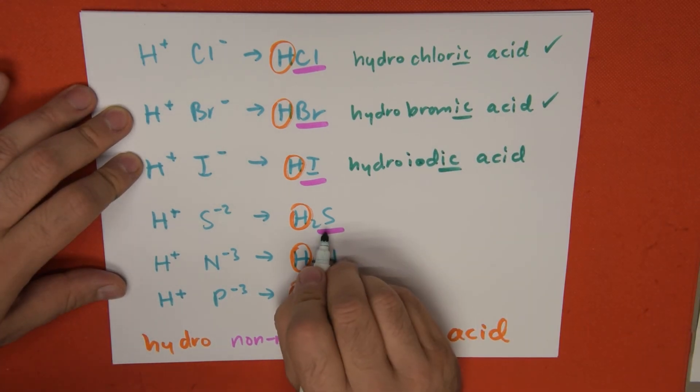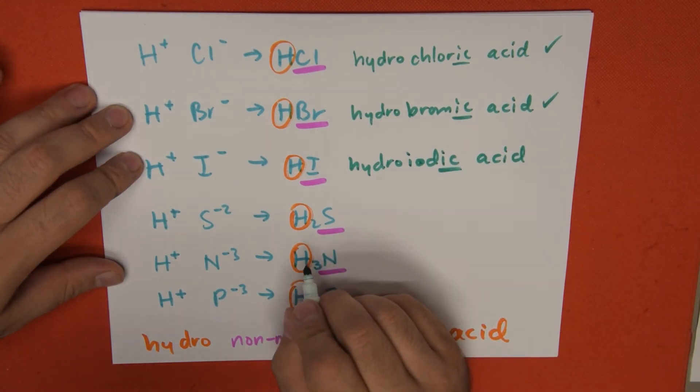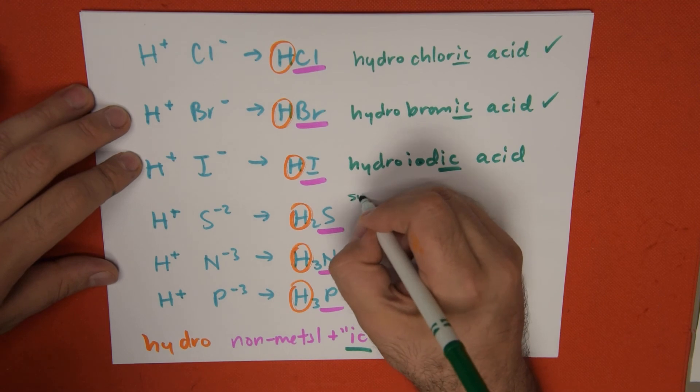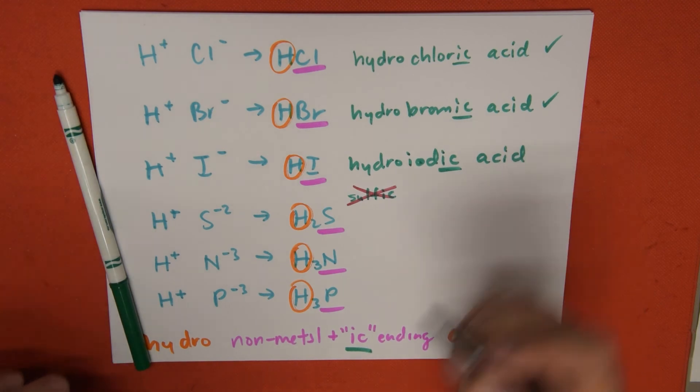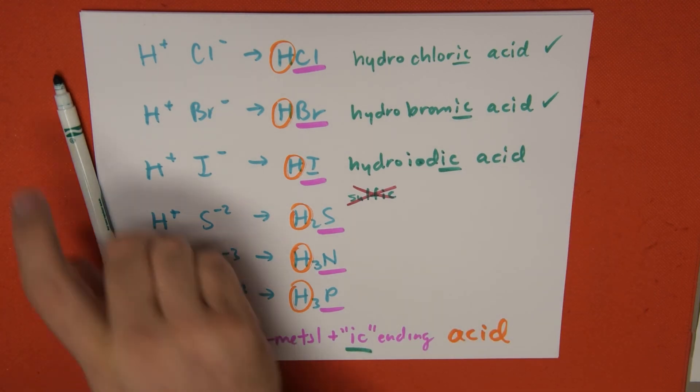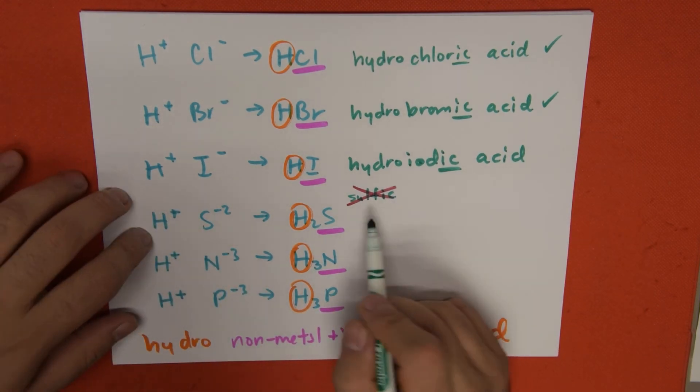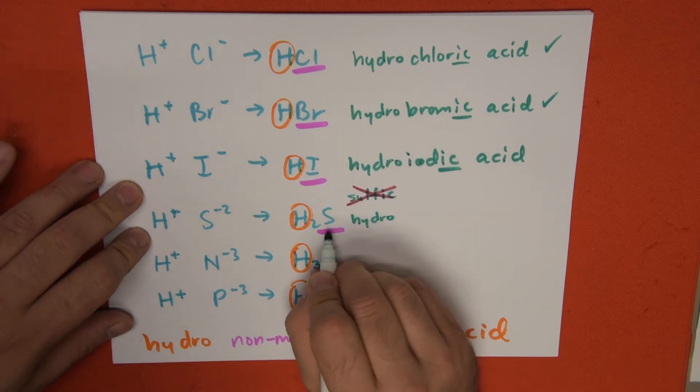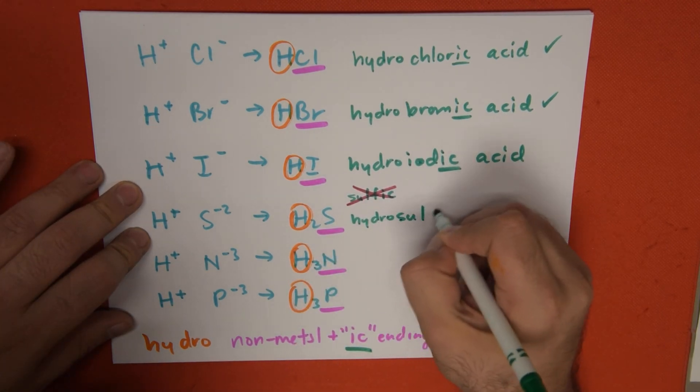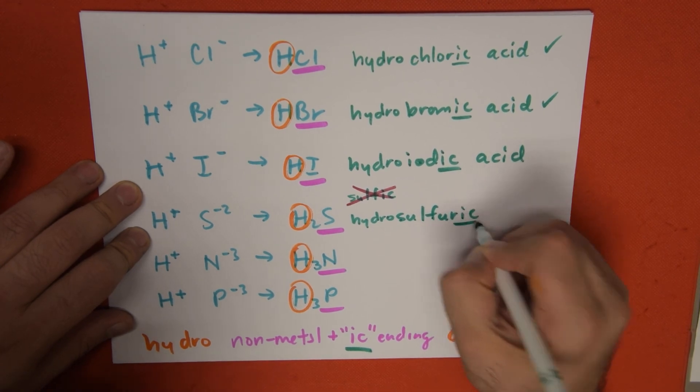Next, sulfur. We're not going to say sulfic, which is a common mistake. If your teacher is really tough on you, it's going to be wrong. The name of the element is sulfur, so we say sulfuric. Hydrosulfuric acid.